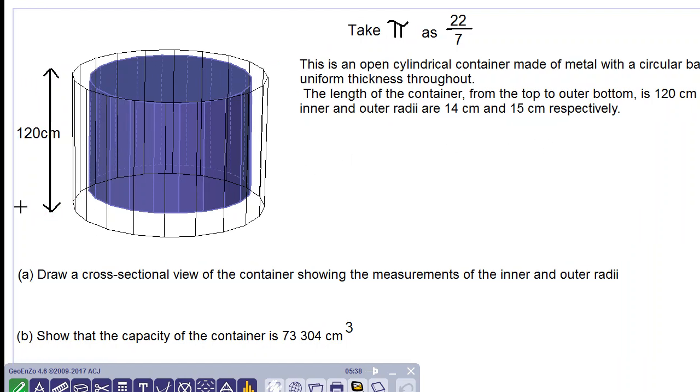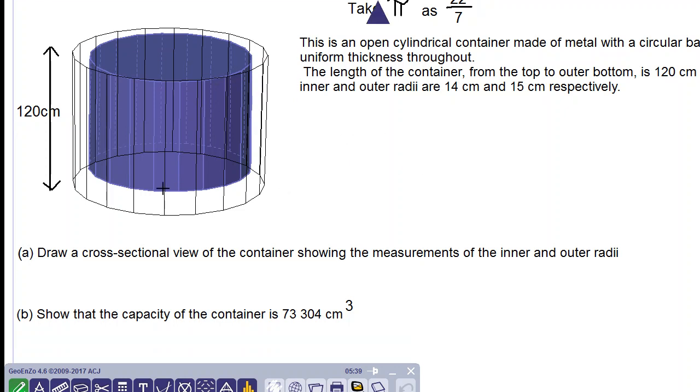We have our diagram here and the height of the container is 120 cm. The blue region represents the space inside of the container that is not metal. It will be occupied by some substance. Right now let's say it's filled with air and we have a uniform thickness throughout.